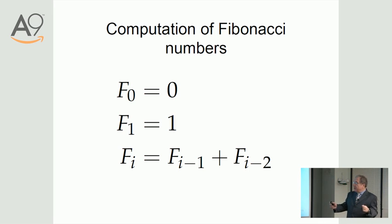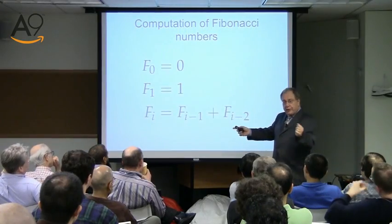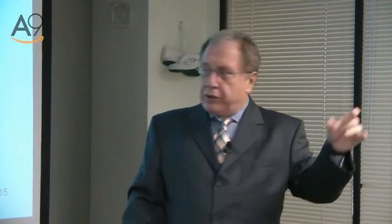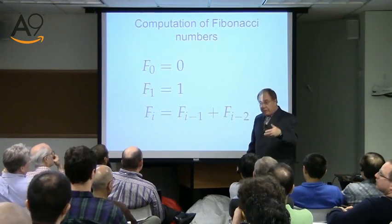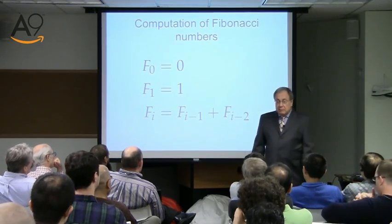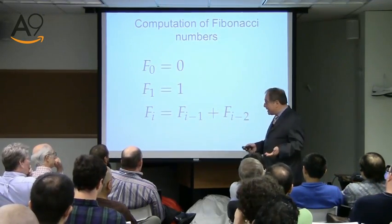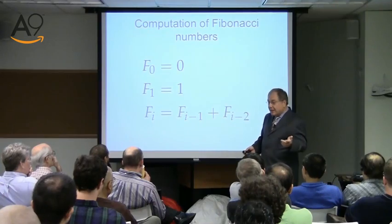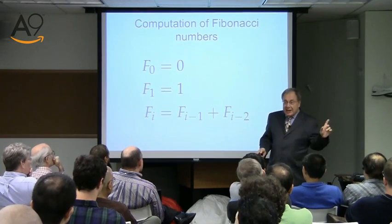If we know one Fibonacci number and the next, we can compute the third. It takes a window of two numbers to compute the third one, and therefore if we know the first two — 0 and 1 — we can keep going forever computing more and more. The classical naive question is: how many steps does it take to get to the nth Fibonacci number? The self-evident answer is n minus 2 — you need to do a linear number of steps.